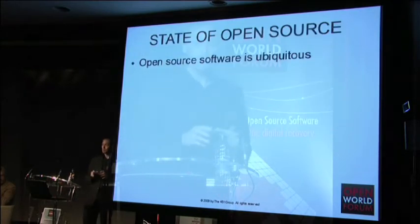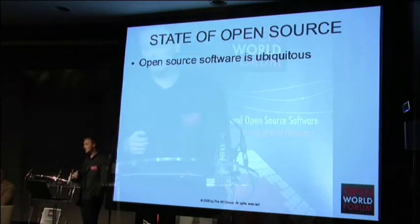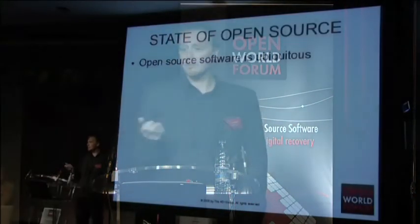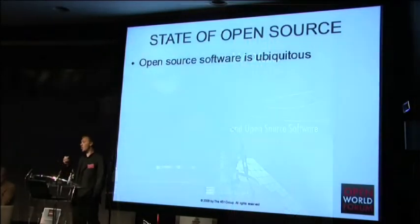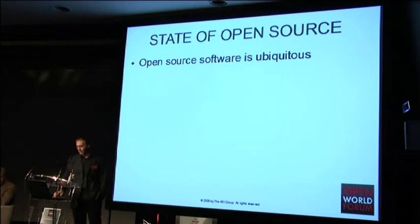The main reason open source has reached this level is that it is now ubiquitous. Gartner said last year that by 2012, 90% of organizations around the world will have open source somewhere in their data centers or on their desktops. At the 451 Group we'd actually see that as a conservative estimate — whether it's 92% or 94% is splitting hairs, but the key message is that overwhelmingly, organizations are using open source.